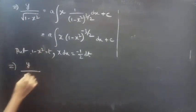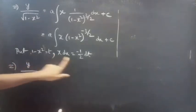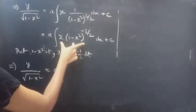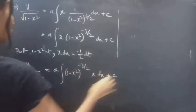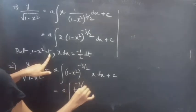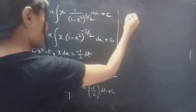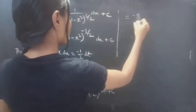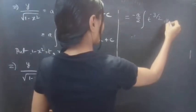Substituting 1 minus x squared equals t and x dx equals minus 1/2 dt into the right-hand side. The integral of (1 minus x squared)^(minus 3/2) times x dx becomes the integral of t^(minus 3/2) times (minus 1/2) dt. Taking minus 1/2 outside gives minus A/2 times the integral of t^(minus 3/2) dt plus c.